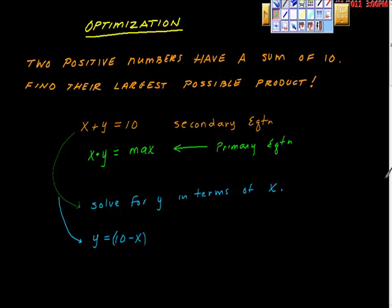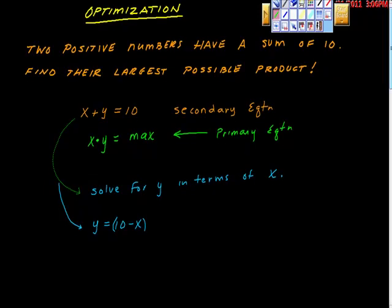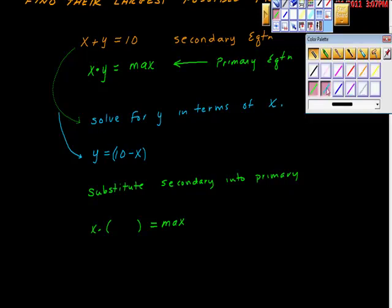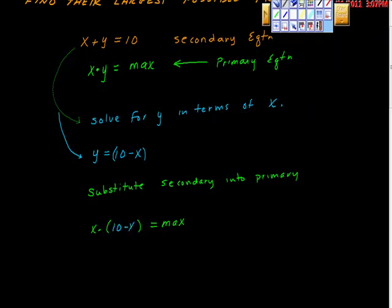Now I'm just going to plug the secondary equation into the primary equation. So the primary equation, remember we had x times y is the thing that we're going to max. And if you're going to do that, remember that y is 10 minus x. Go ahead and do the distribution here.